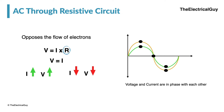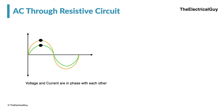Now let us understand the power through a resistive circuit. We need to understand one important concept: instantaneous power. For example, if I want to calculate the power at a particular instance where voltage and current are both maximum, I simply multiply the current maximum times the voltage maximum to get P max. This power is only true for that particular instance, and hence it is called instantaneous power.